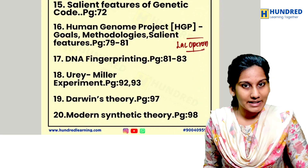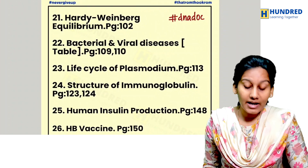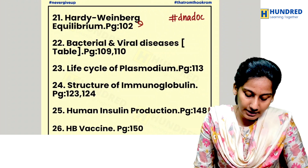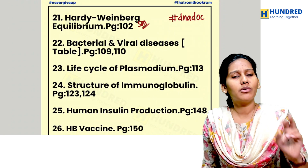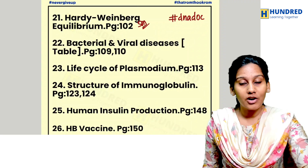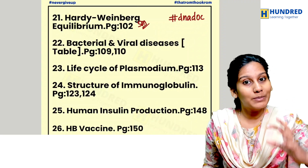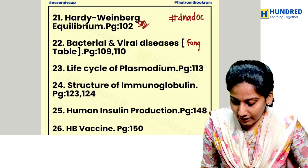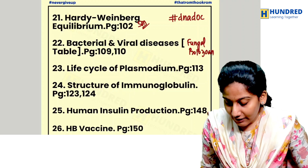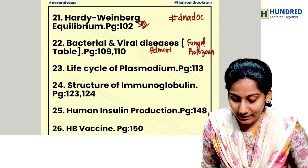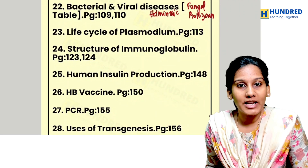For evolution, cover Darwin's theory, the Modern Synthetic Theory, and Hardy-Weinberg equilibrium. For diseases, split questions by type: viral, bacterial, fungal, protozoan, and helminthic disorders — know the causative agents and symptoms for each.